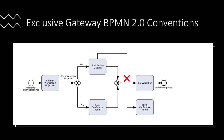Another important rule to remember is that we cannot have overlapping sequence flows, as shown in this example. We need to come up with another way to represent the process — either by going around the task or by adding a gateway to help us merge sequence flows.